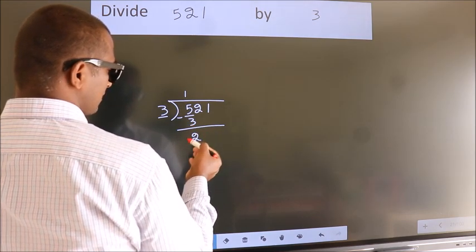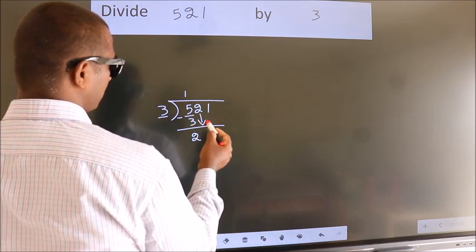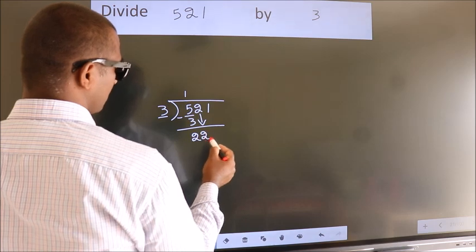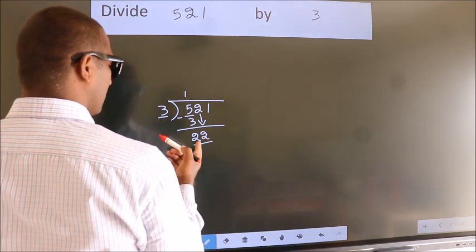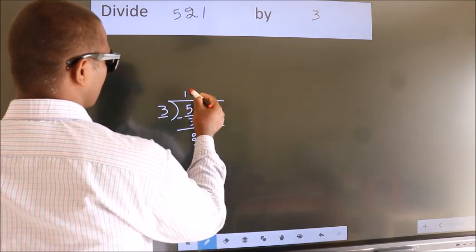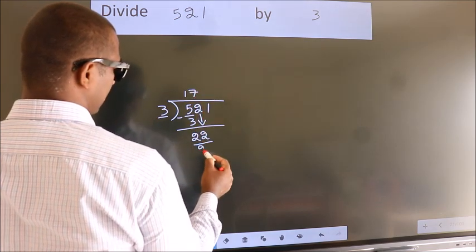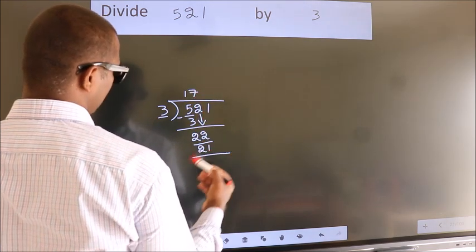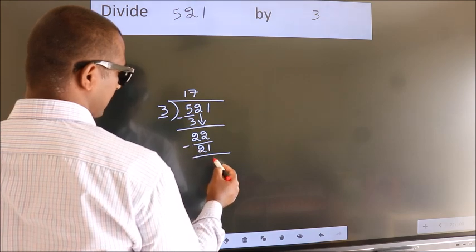After this, bring down the beside number. So, 2 down. So, 22. A number close to 22 in the 3 table is 3 times 7 equals 21. Now, we subtract. We get 1.